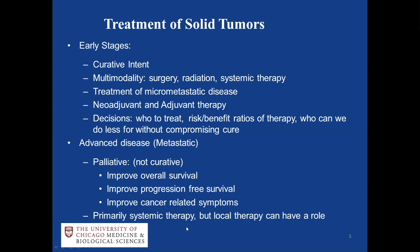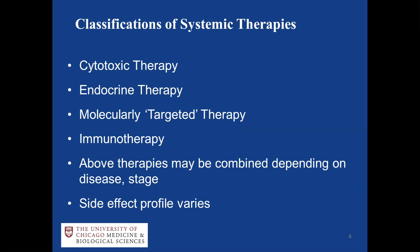For our stage four patients, most therapies are systemic — a combination of IV therapies including cytotoxic chemotherapy, targeted therapies, or immunotherapies. Local therapy like surgery or radiation can have a role primarily in the palliative setting, and Dr. Golden will talk more about that in his radiation talk.